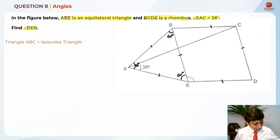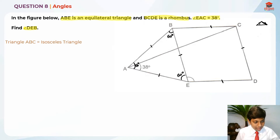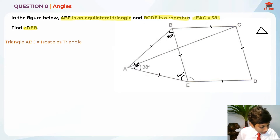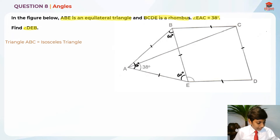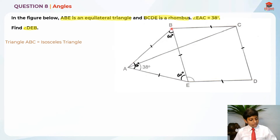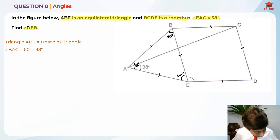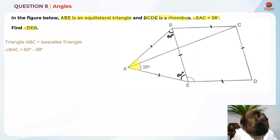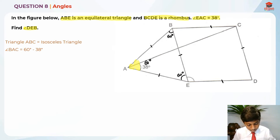An isosceles triangle means two sides have the same length, and the base angles are also the same. So basically there's a triangle here — these two lengths are the same, and the base angles are equal. That is what isosceles means. So when triangle ABC is an isosceles triangle, we can find angle BAC, which is actually 60 degrees over here — this whole angle is 60 degrees.